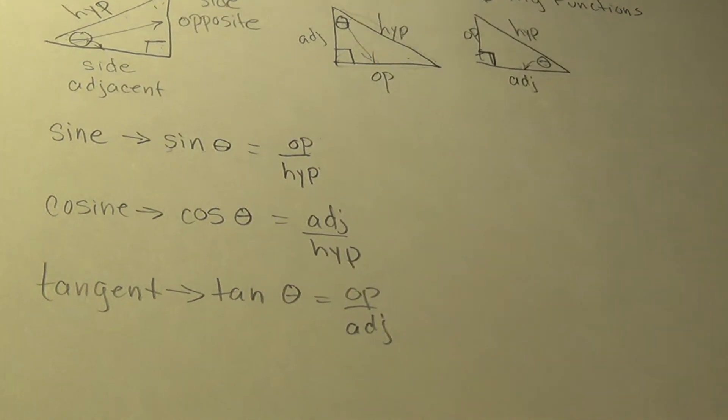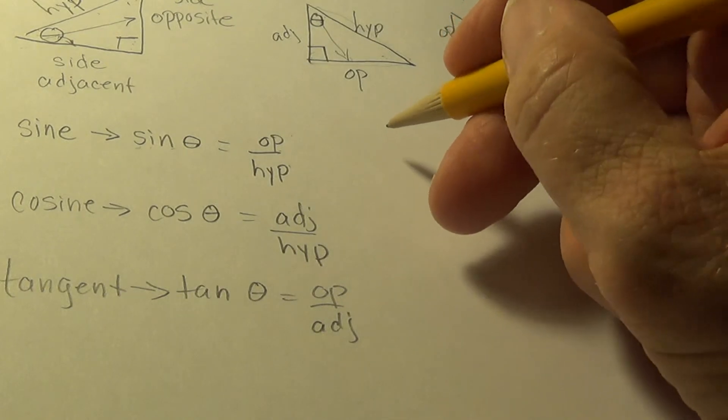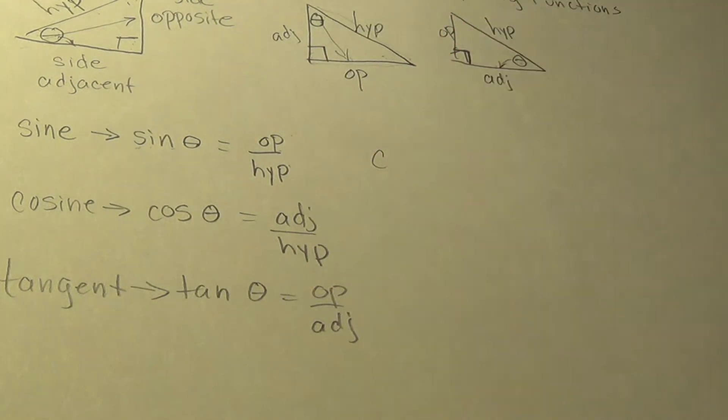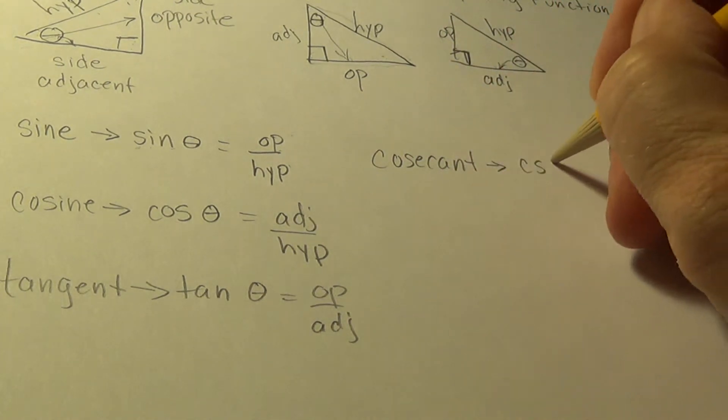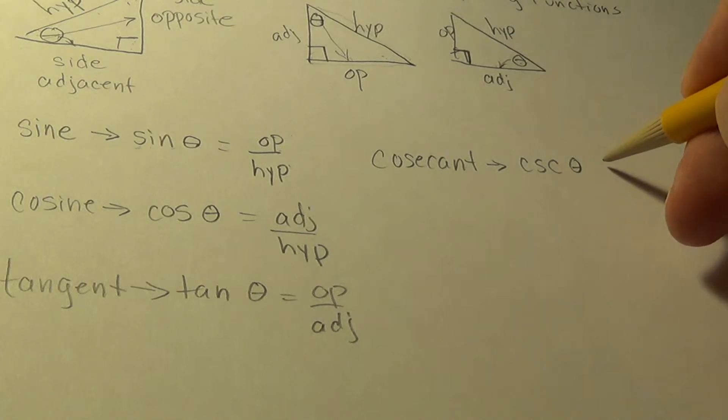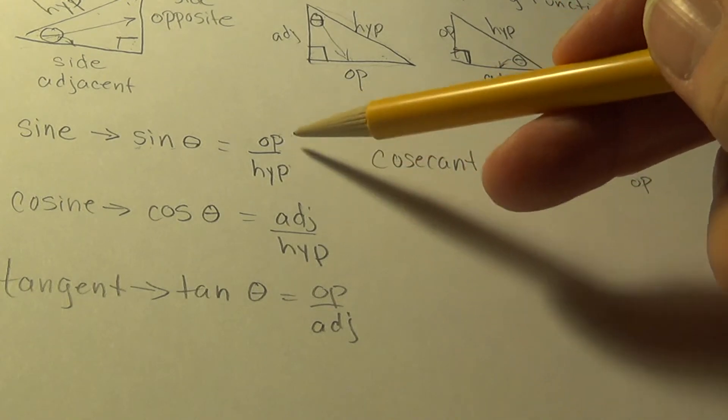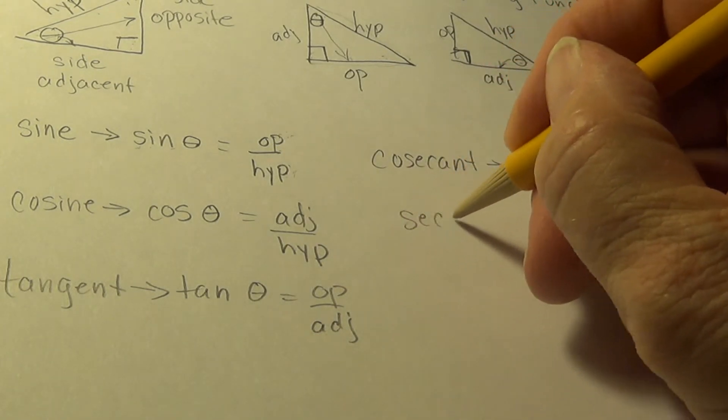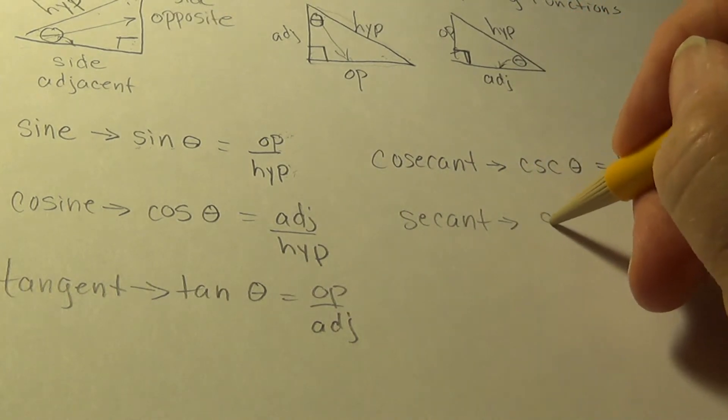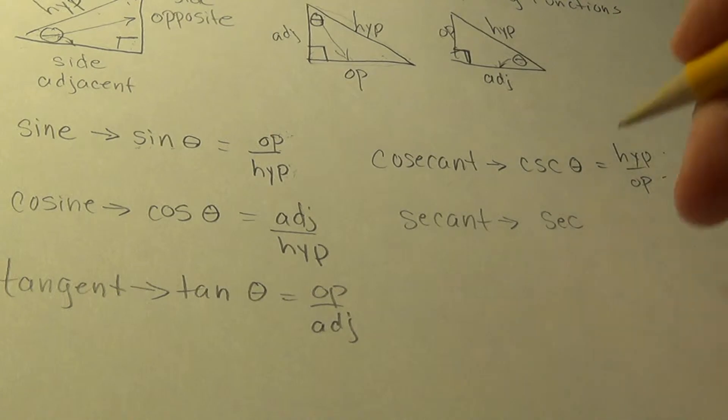It turns out that these can flip and we have another trig function. When we flip the sine function, we get the cosecant and its abbreviation is C-S-C theta and it is hypotenuse over opposite. Notice, it's just the inverse. Cosine's inverse is secant. Its abbreviation is secant of theta and it is hypotenuse over adjacent.